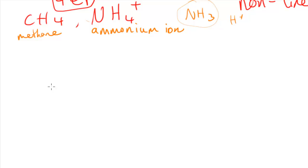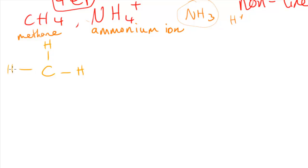Let me first draw a model of what it could look like if it was in one plane. If methane were in one plane, we'd have carbon bonded to four hydrogens with all angles equal to 90 degrees. But this molecule can do better than 90 degrees, and so what it does is form a three-dimensional structure instead.